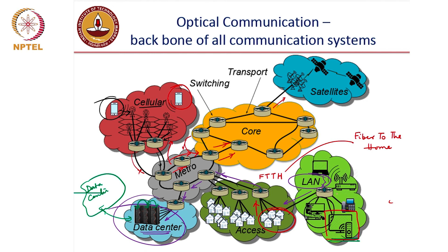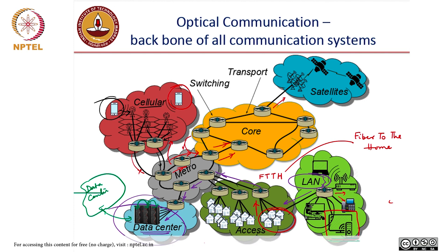The fiber can reach your apartment and within the apartment it gets distributed through optical fiber. If you take a new Tata Sky or any video-on-demand connection, you will see an optical fiber inside your home. All that connectivity is also happening through optical fiber. The network topologies for each of these links are very different — that is a part of the course: what network topology you would use for an access network versus a metro network versus a long-distance network.